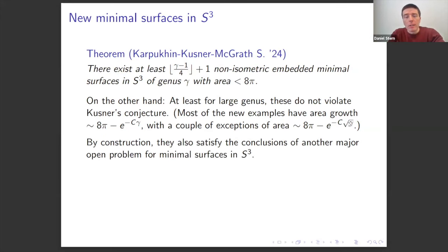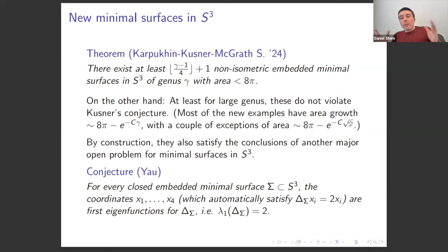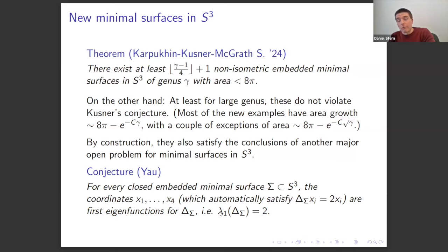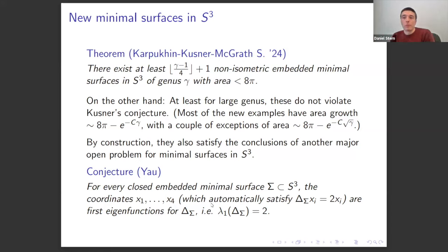These new examples also satisfy the conclusions of another major open problem: Yau's conjecture. For any minimal surface inside the 3-sphere, the coordinate functions are eigenfunctions of the Laplacian for the induced metric with eigenvalue 2. Yau conjectured that these are actually first eigenfunctions — first non-zero eigenfunctions of the Laplacian. If true, this would suggest that every embedded minimal surface in the 3-sphere can be recovered by variational methods for the first eigenvalue of the Laplacian.